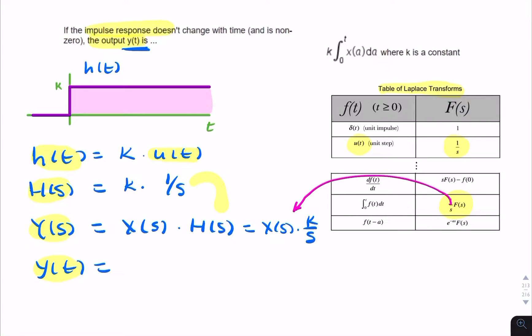So we can write Y of T as K times the integral from 0 to T. Instead of F of T, we would write X of T, dT.